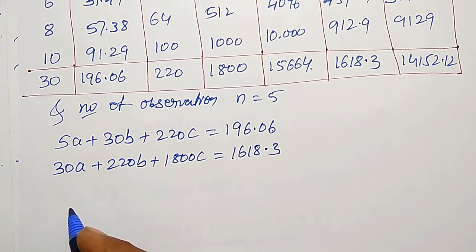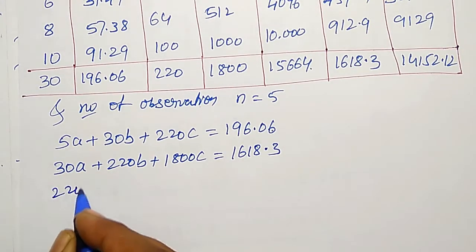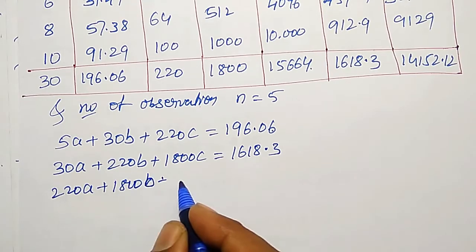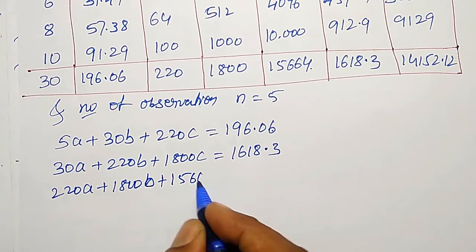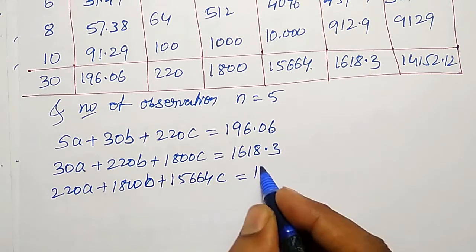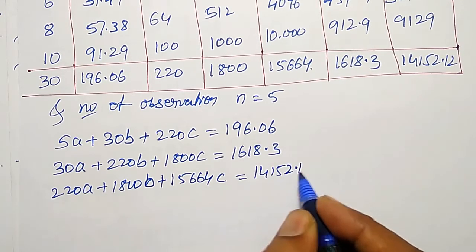Third equation: summation x square a, x square is 220a, 1800b, plus summation x raise to 4, 15664c equal to x square y, 14152.12. These are the three equations, simultaneous equations.